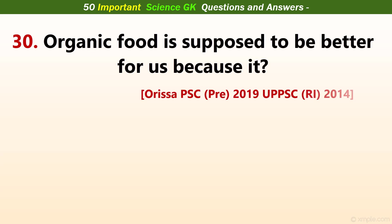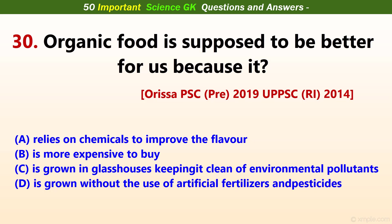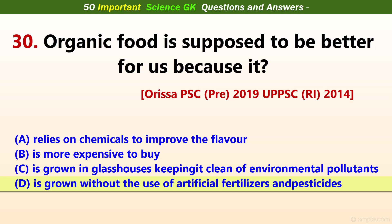Organic food is supposed to be better for us because it? Answer D: Is grown without use of artificial fertilizers and pesticides.